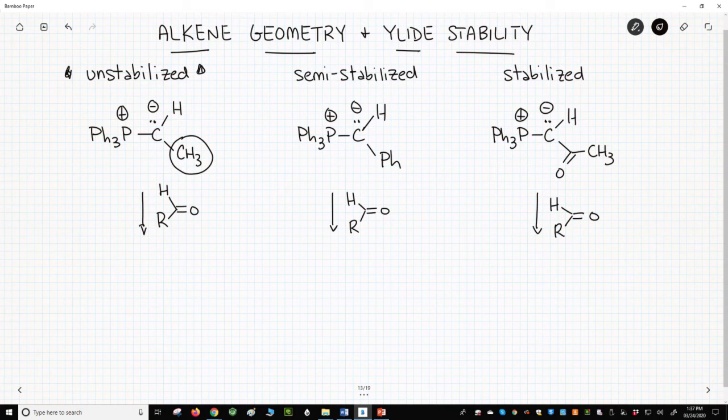The middle Wittig reagent has a phenyl R group. The pi bonds in the benzene ring can weakly stabilize the C- through resonance, but the effect is weak. This is called a semi-stabilized ylid.